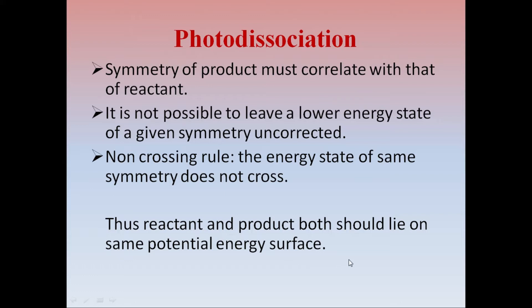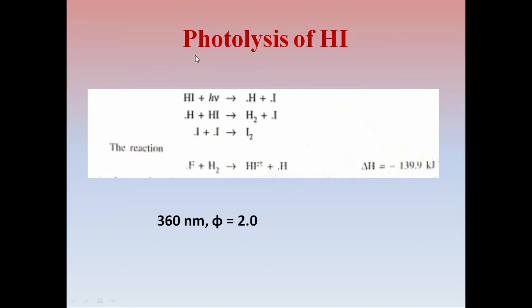These are the symmetry correlation rules generally observed during photodissociation or photolysis. Now let us see few examples which involve photolysis or photodissociation. The first one is photolysis of hydrogen iodide. The photodissociation of hydrogen iodide shows absorption band beginning at 360 nanometer and lambda max observed at 218 nanometer with a quantum yield of 2.0.